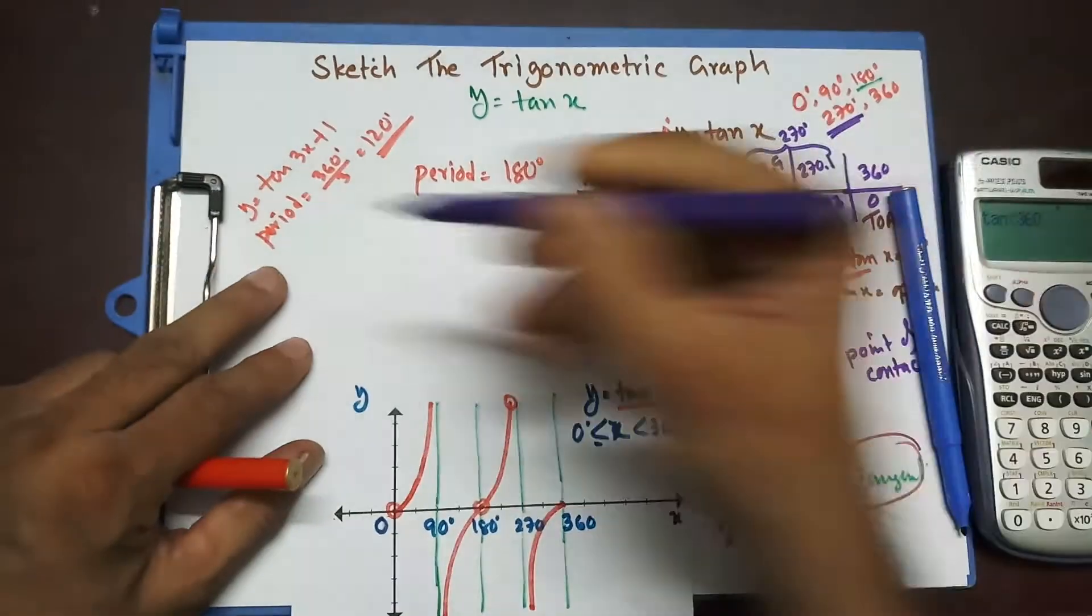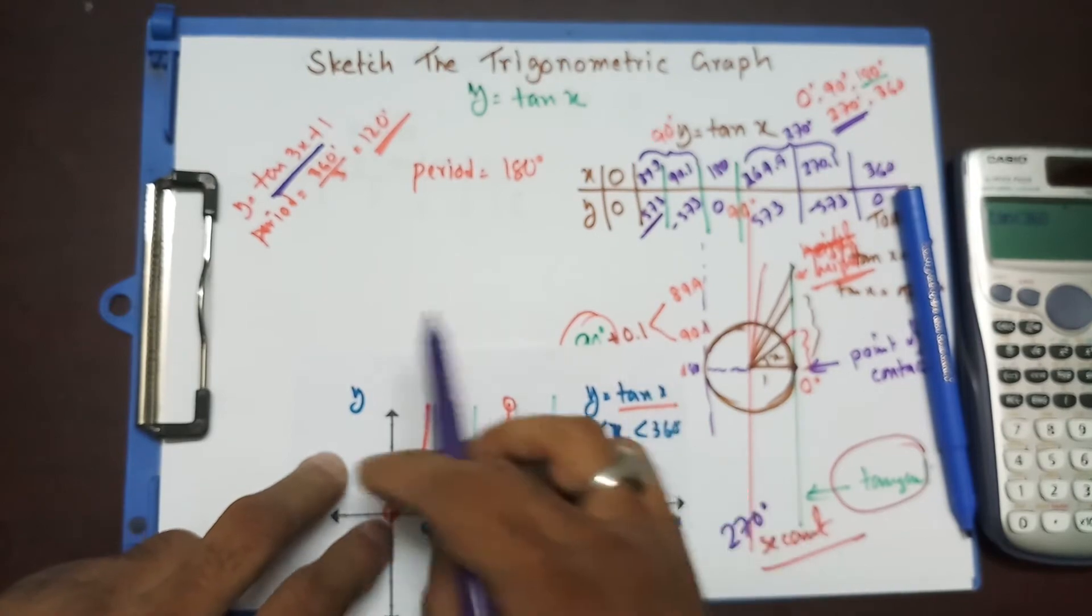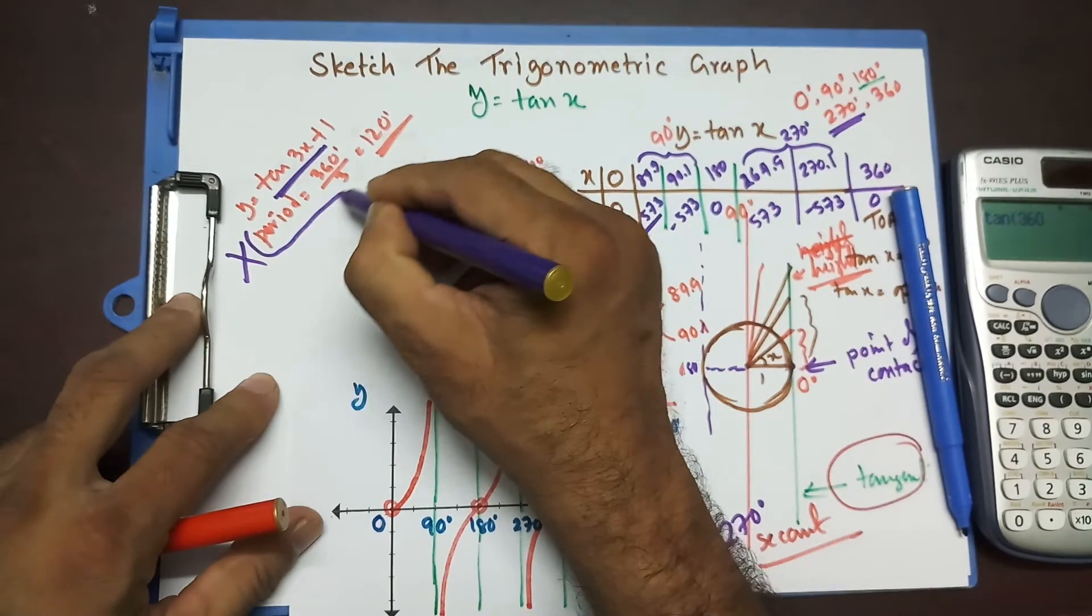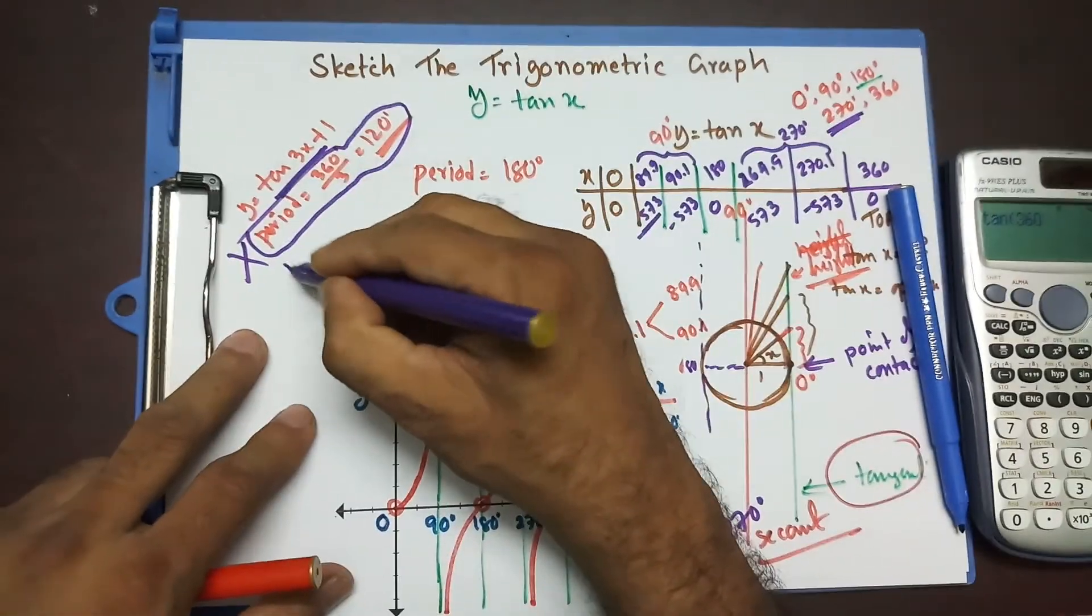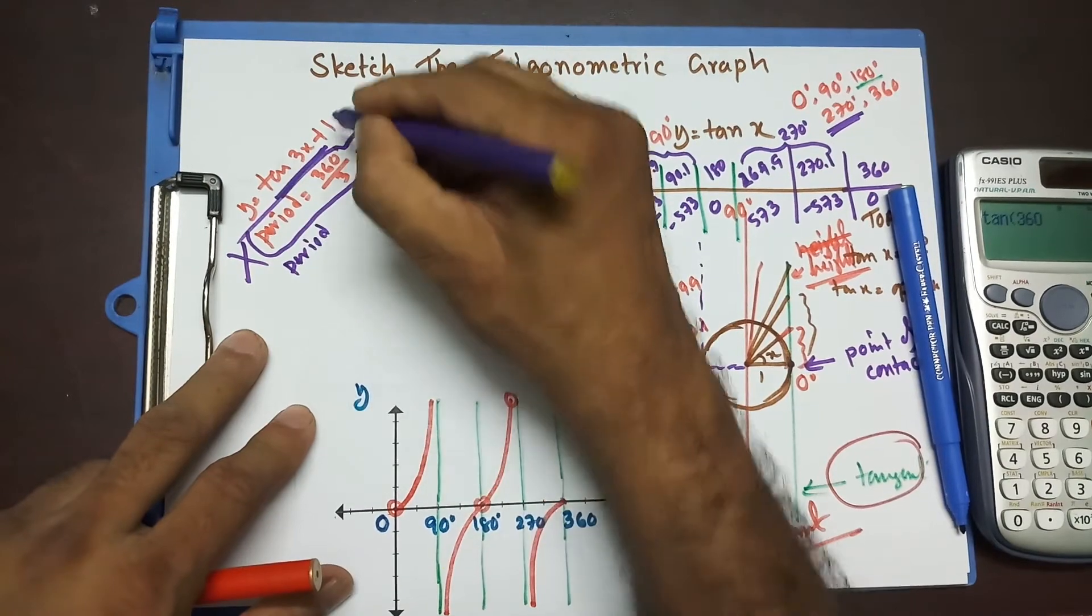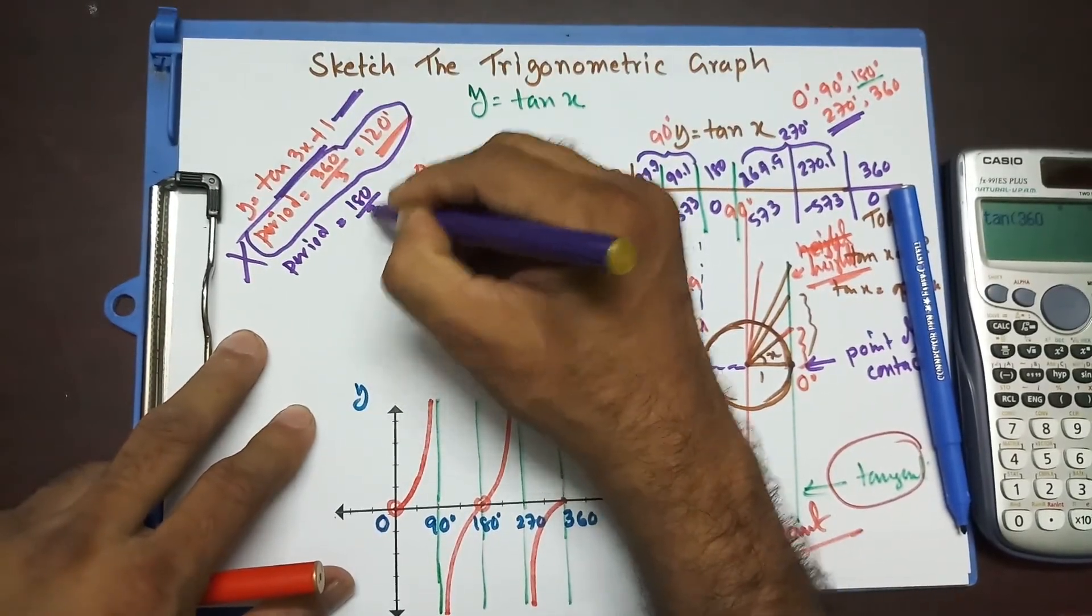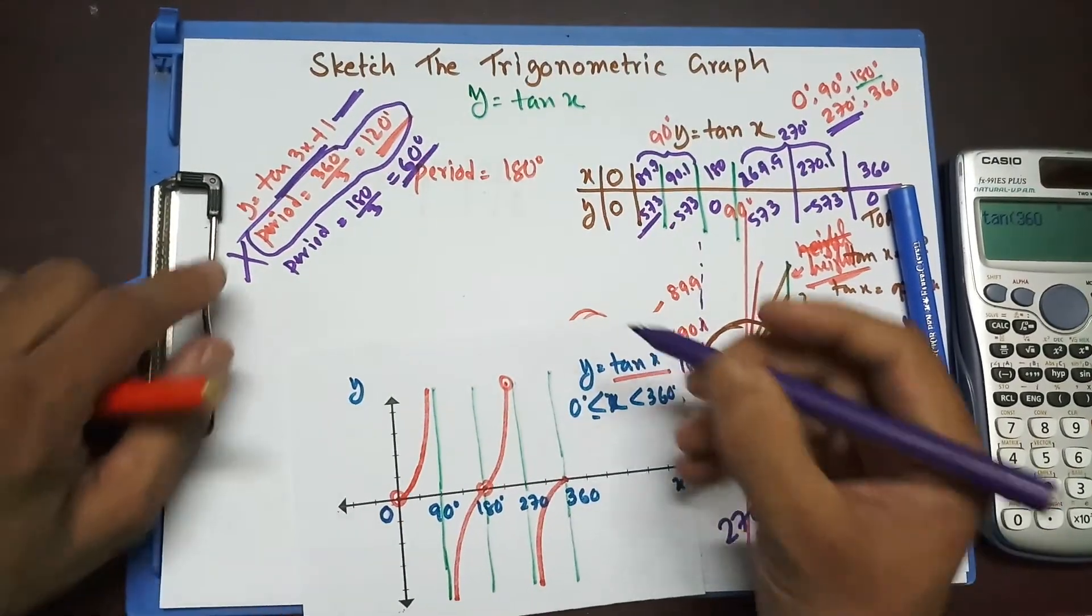But, remember, this is tan graph. Tan graph having two cycles, complete cycles, within 360 degree. So, this is wrong over here. Whatever we have done over here is wrong. So, what are you going to do? The new period would be, for this particular graph, it's going to be 180 divided by 3. That's going to be 60 degree.